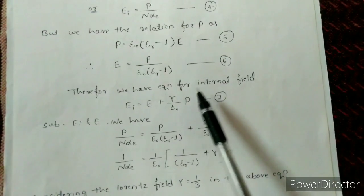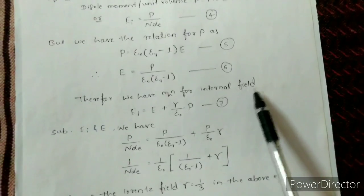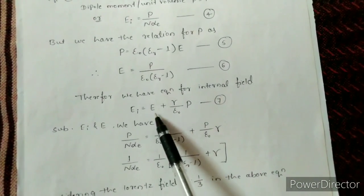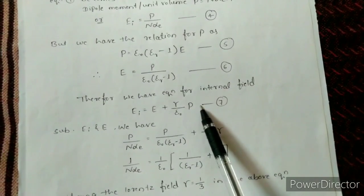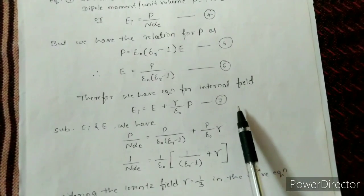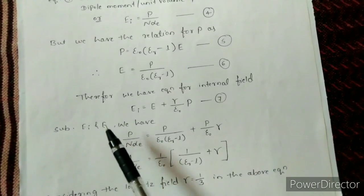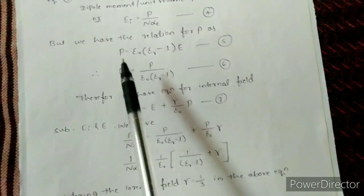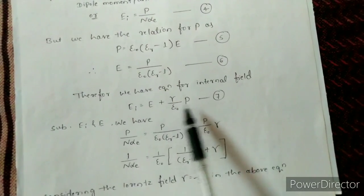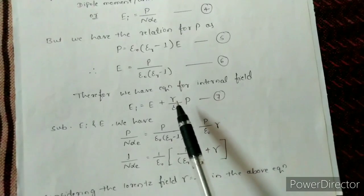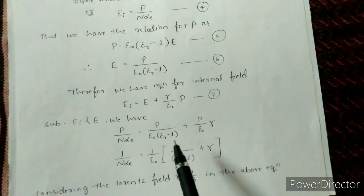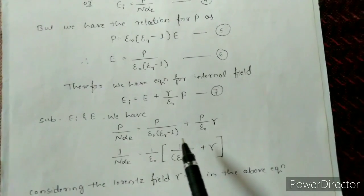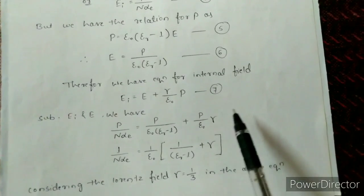Therefore, the equation for internal field is: EI = E + (γ / ε₀)·P, which we take as equation 7. We now substitute the values of EI and E. Substituting EI = P / (N·αE) and E = P / (ε₀·(εᵣ − 1)), we get: P / (N·αE) = P / (ε₀·(εᵣ − 1)) + P·γ / ε₀.